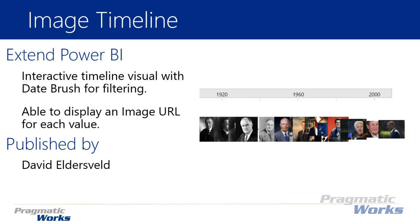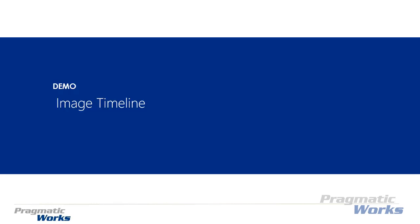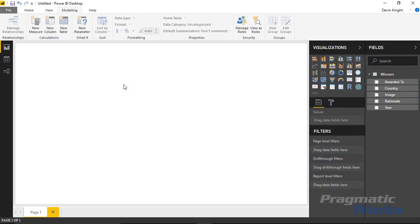You also have the ability to bring in images from a URL and display those images within your Power BI report — it's made very easy to do. Let's walk through an example of how you can use the image timeline, using an example based around Nobel Peace Prize winners.